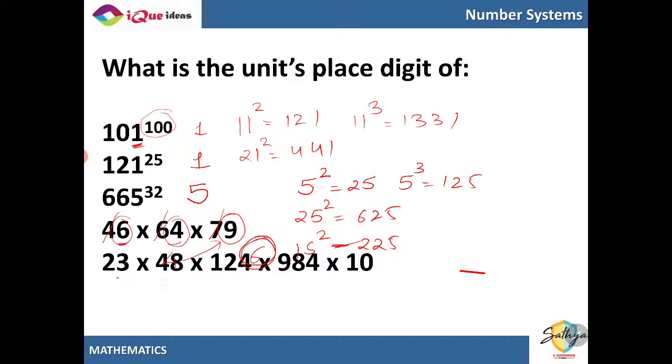Similarly here you can do the long work but the moment a 0 is there in the units place the product will always end with the unit place as 0. So whenever there is a 0 in between we automatically know that the units place digit here has to be 0.